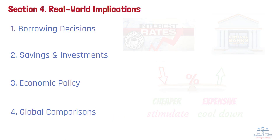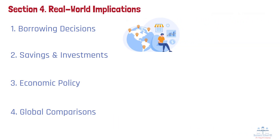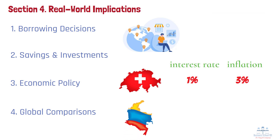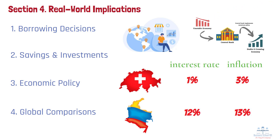Interest rates vary widely across countries, reflecting unique economic conditions, inflation levels, and policy objectives. For example, in early 2023, Switzerland maintained an interest rate around 1% despite 3% inflation, while Colombia's interest rate exceeded 12% to address 13% inflation. These stark differences illustrate how central banks tailor policies to their specific economic challenges and expectations.